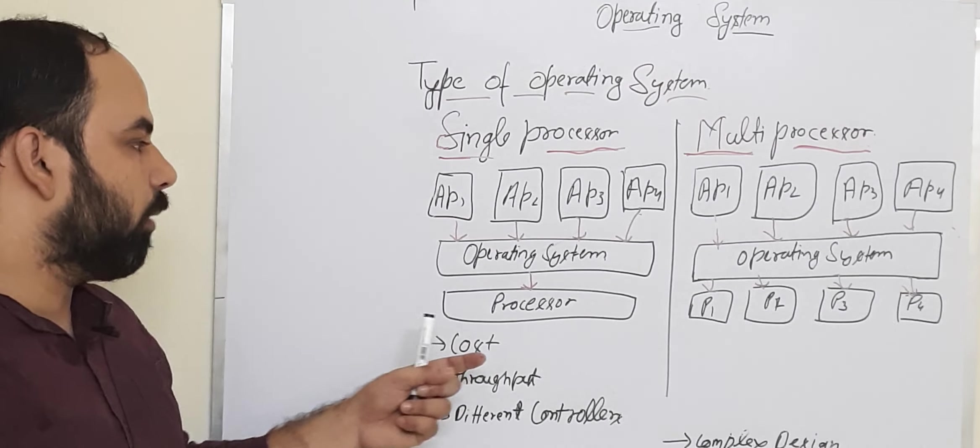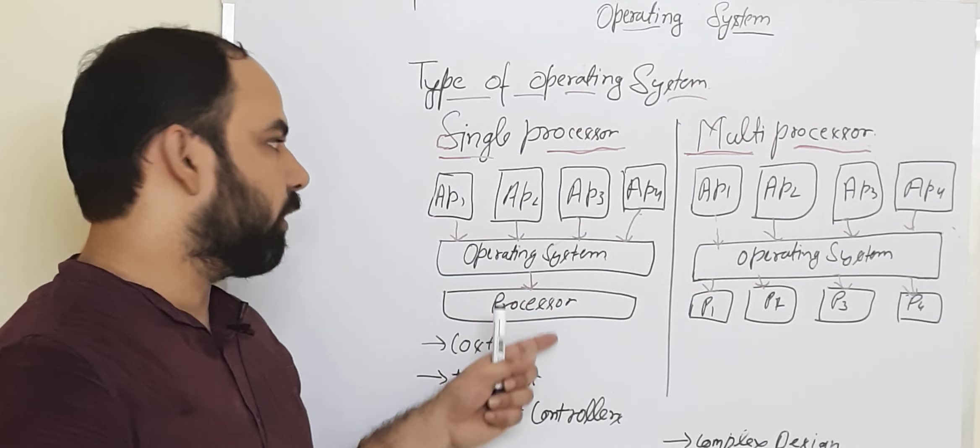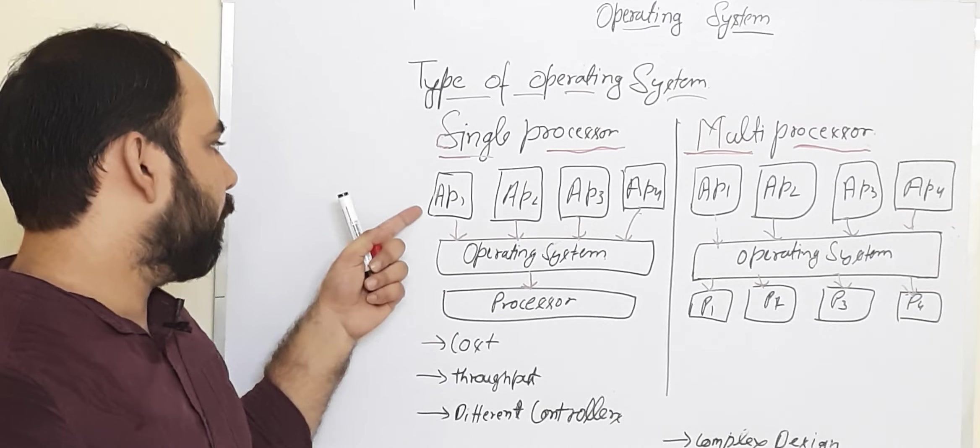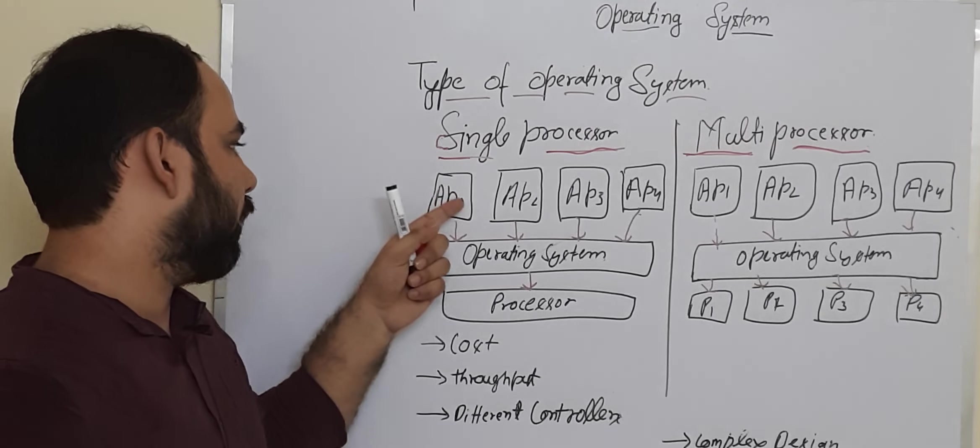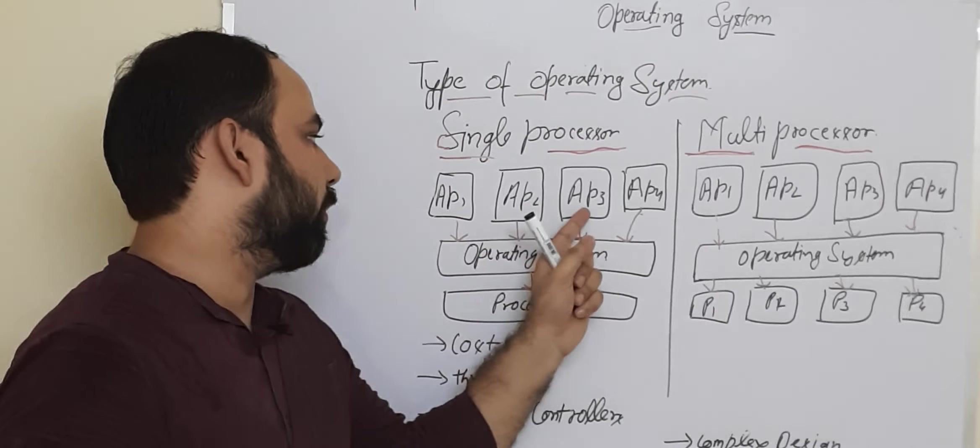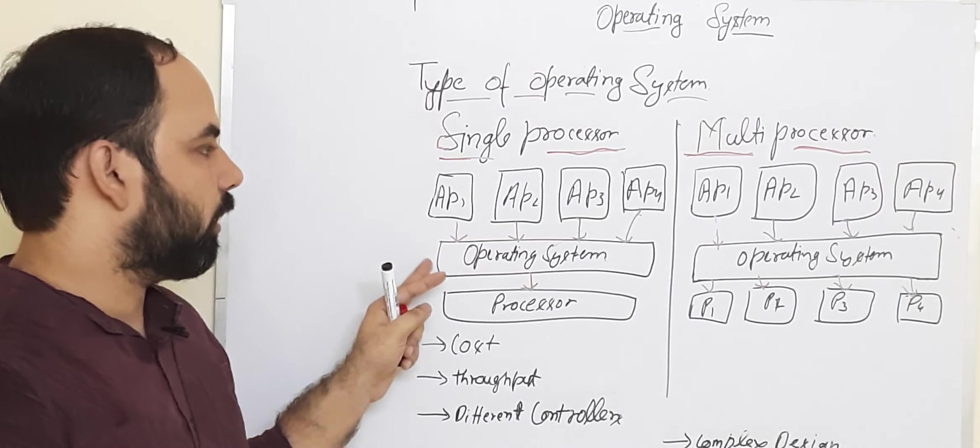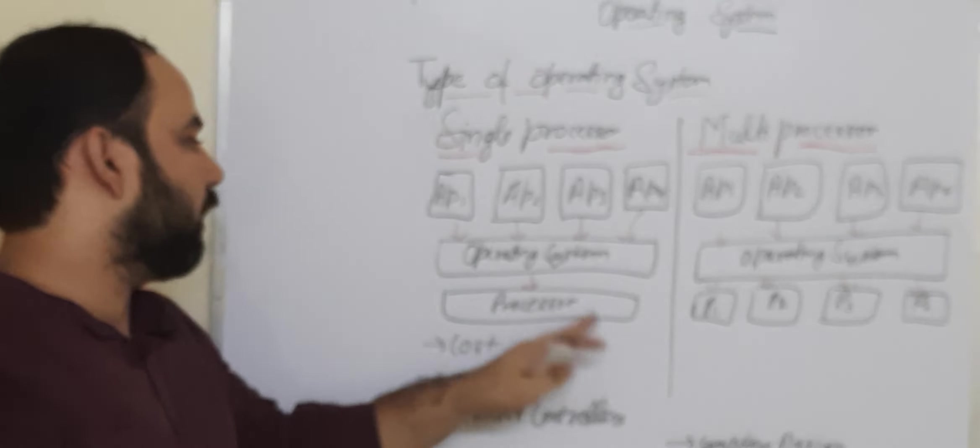What happens in single processor operating system? The operating system has one processor. Multiple applications like application 1, application 2, application 3, and application 4 are connected to one operating system and the operating system is connected to one single processor.